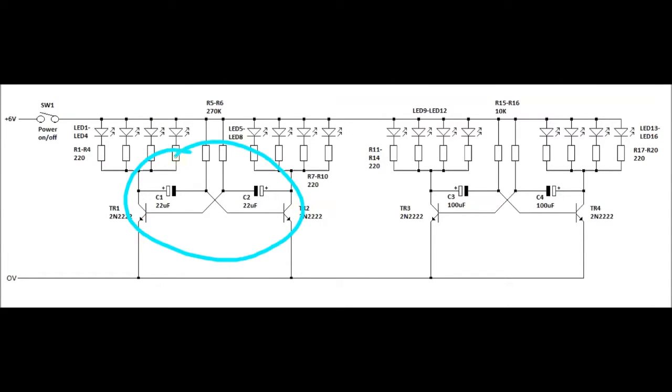The circuit consists of two transistor astable multi-vibrators, and each astable multi-vibrator consists of two transistors. These are 2N2222 transistors, but you can use any general purpose NPN transistors.